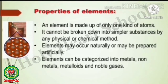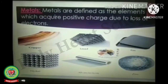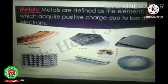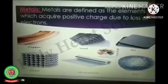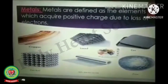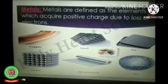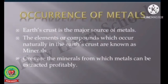Elements can be categorized into metals, non-metals, metalloids, and noble gases — these are the four classes of elements. Metals are defined as the elements which acquire positive charge due to loss of electrons. Examples are copper, lead, tin, nickel, aluminium, and zinc.